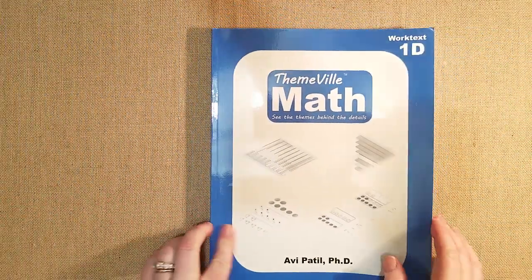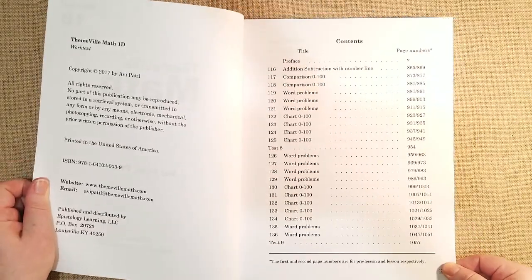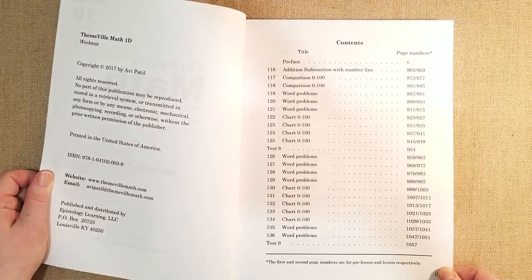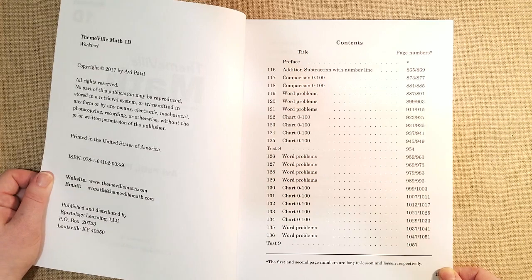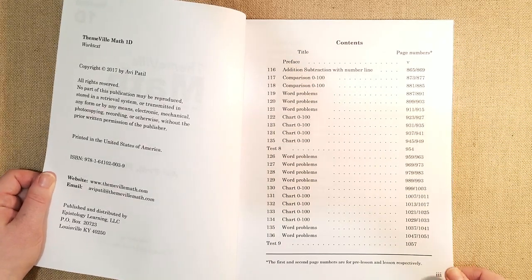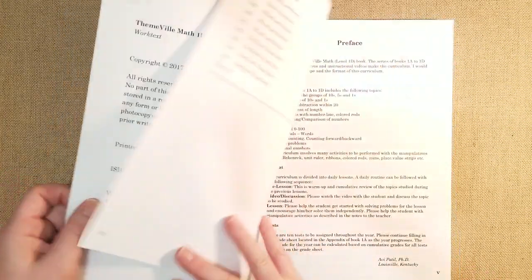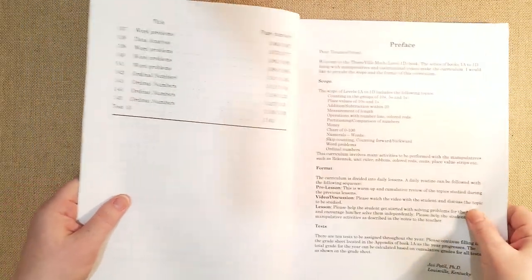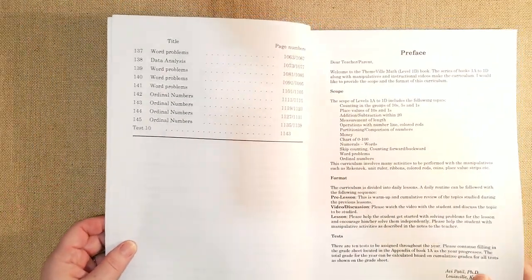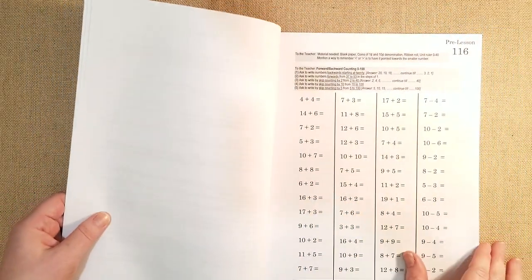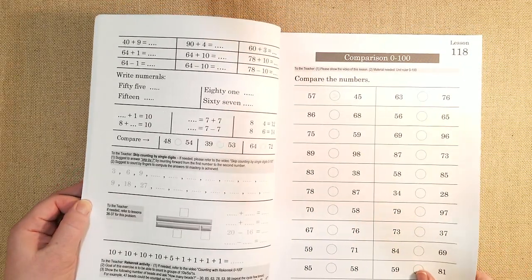And then this is the last book that they'll be doing. Addition, subtraction with number line, comparison 0 to 100, word problems, chart 0 to 100, they do a lot of charts and they also do data analysis and they do ordinal numbers so that is all that they go over for the first grade level.